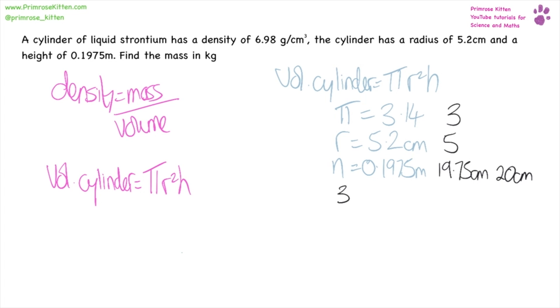So what I have is 3 times 5 squared, which is 25, times 20. So I end up with 75 times 20, giving us an answer of 1,500 centimeters cubed. So that is our volume.